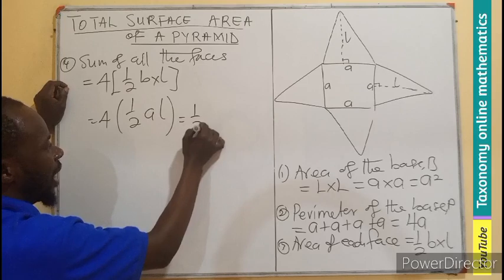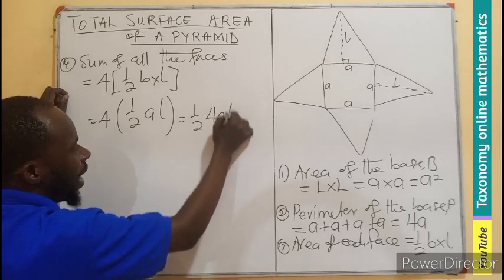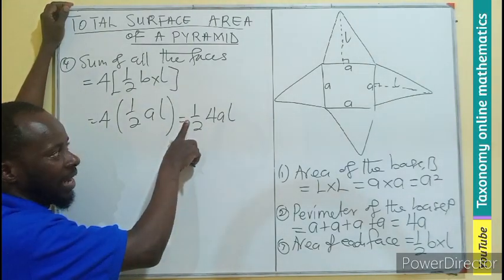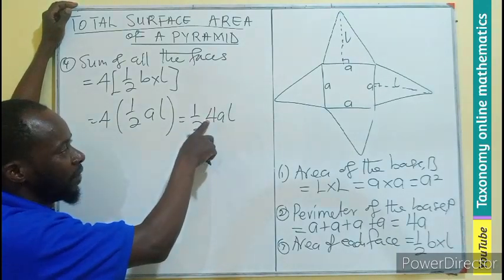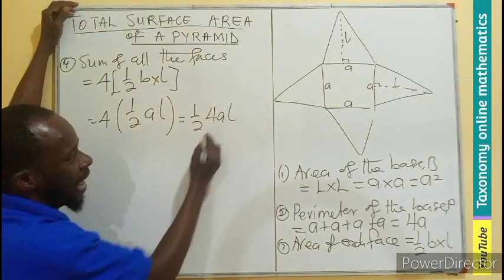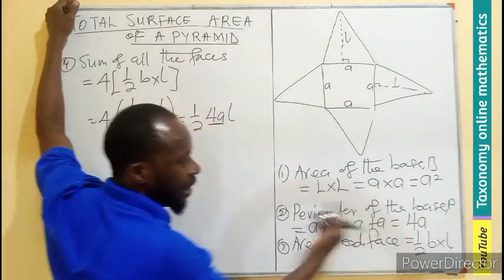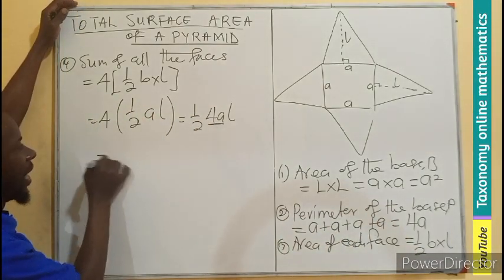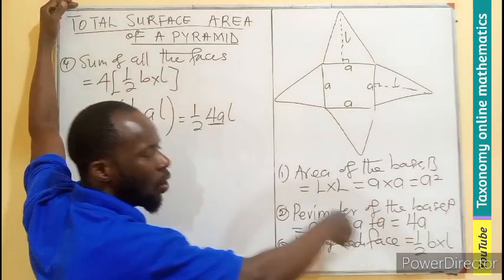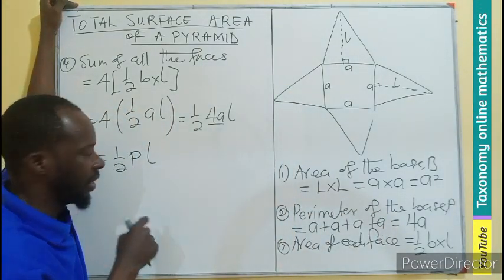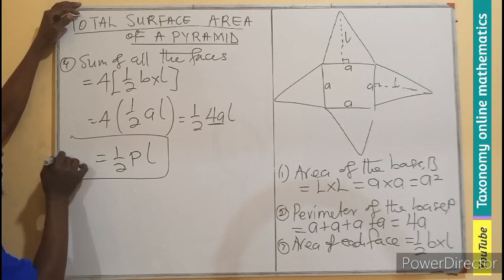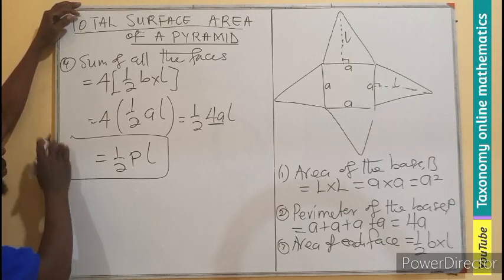We can cancel and rearrange: (1/2) × 4aL. Notice that 4a is the perimeter of the base, which we called P. So we can rewrite this as ½PL, where P is the perimeter of the base. This becomes the formula for the lateral surface area — that is, the surface area of all the triangular faces excluding the base.